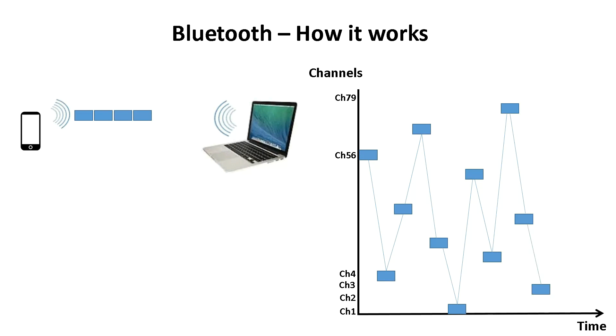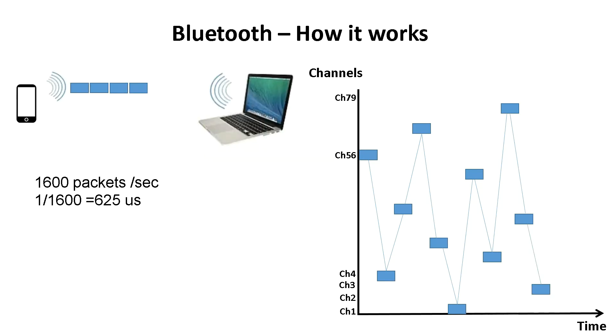As I mentioned before, there are 1600 frequency hops every second, which means every 625 microseconds a packet will be sent on a different frequency.